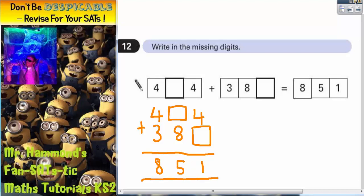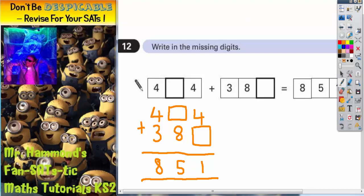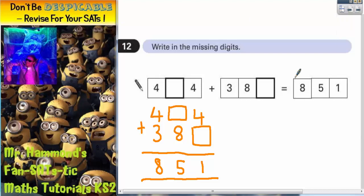Now the trick here is to start going through this like you would with a normal column method addition. Four plus something has got to equal one there. Well that's not going to work because four is already more than one. So you've got to think, well what could this one actually mean? Remember in the column method sometimes we go over ten. So the next number that ends in a one that goes over ten would be eleven. So this one actually must stand for eleven.